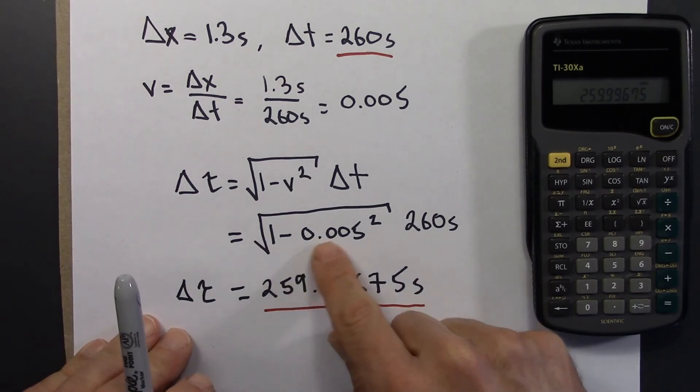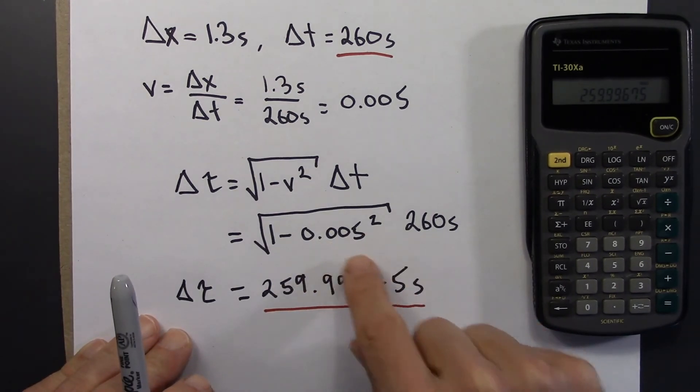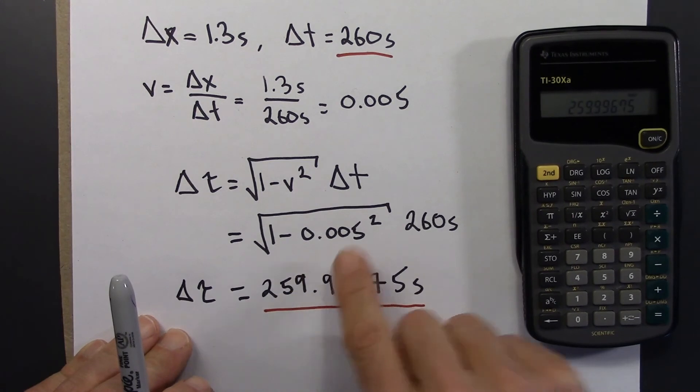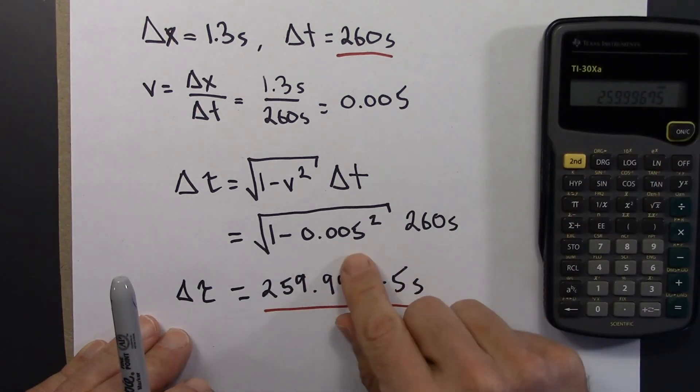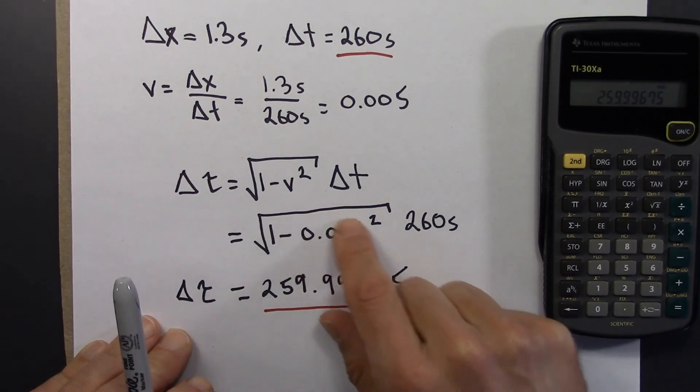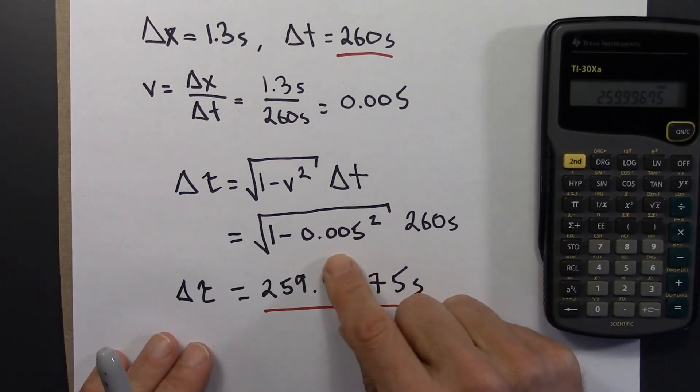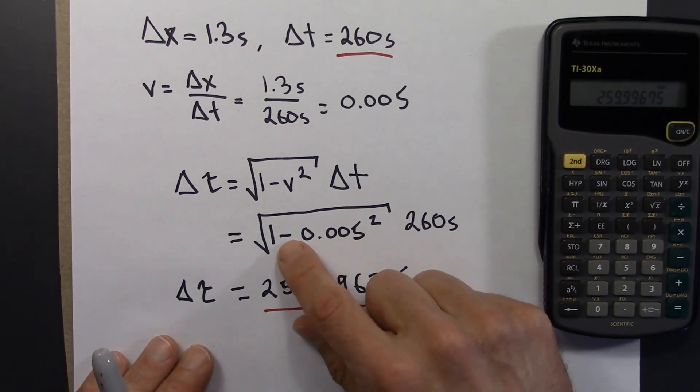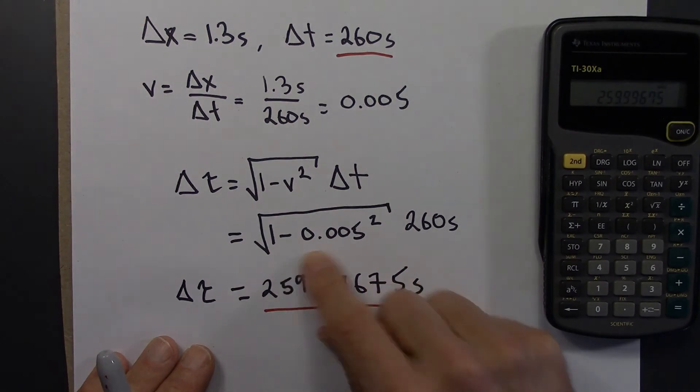Notice, though, that these numbers, 0.9999 blah blah blah, are pretty awkward to work with, and may even overwhelm a calculator. And it might be nice if there's some way, kind of some easier way that we can handle square rooting numbers that are very, very close to 1. And the answer is that there is.